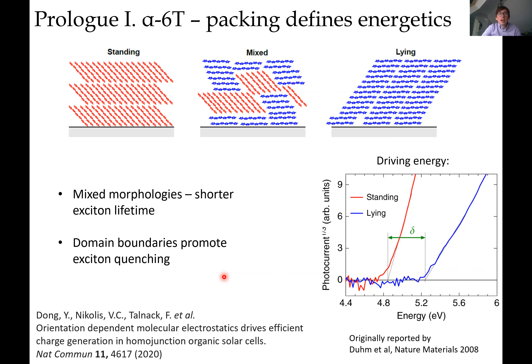Looking in more detail, with many groups doing morphological studies and modeling, we arrived at a picture where depending on the deposition of alpha-6T, we can have local domains packed in slightly different ways. Different packing arrangements give slightly different energetics, visible by photoemission. These steps in energetics within the pure alpha-6T film can provide enough gradient to split excitons into free carriers.